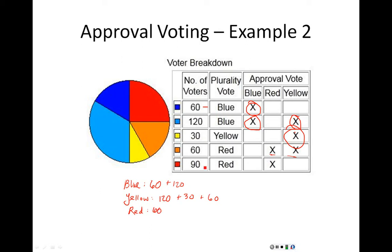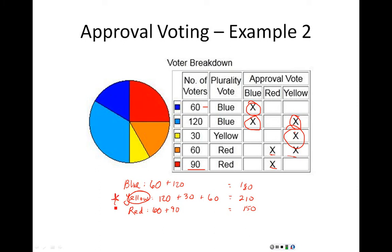Then we come to red: we get 60 approval votes for red from that group. And at the very end, there were 90 voters who approved of only red, so we add those 90 votes only to the red category. Adding them all up: 180 approval votes for blue, 210 approval votes for yellow, and 150 approval votes for red. So in this case, yellow is the grand winner.